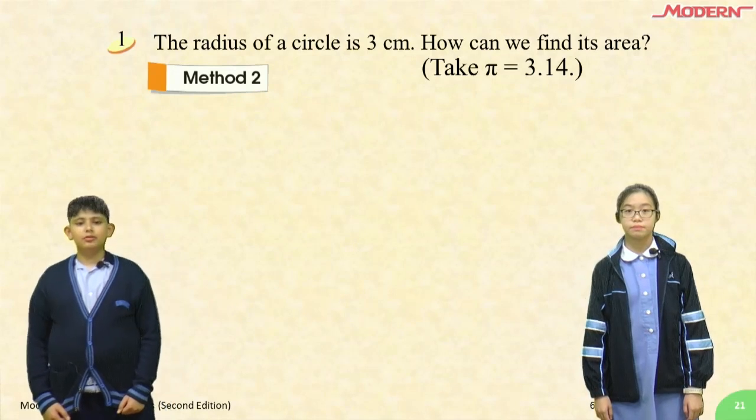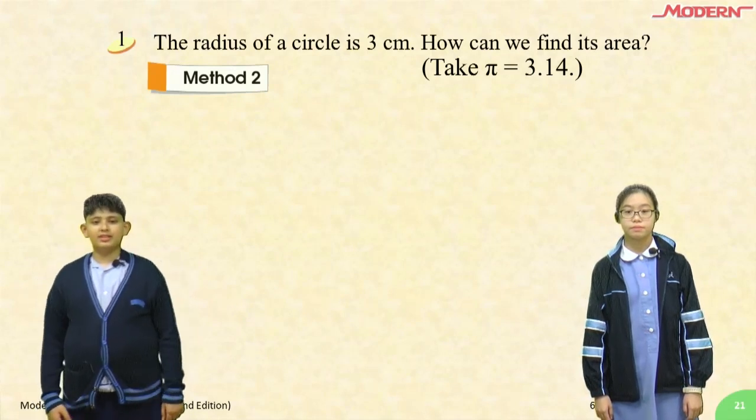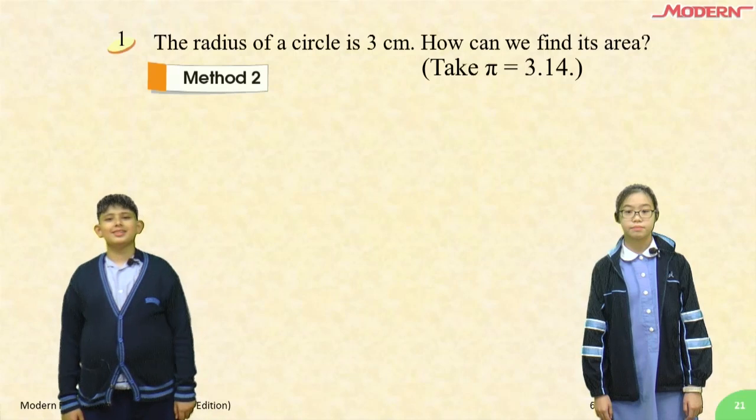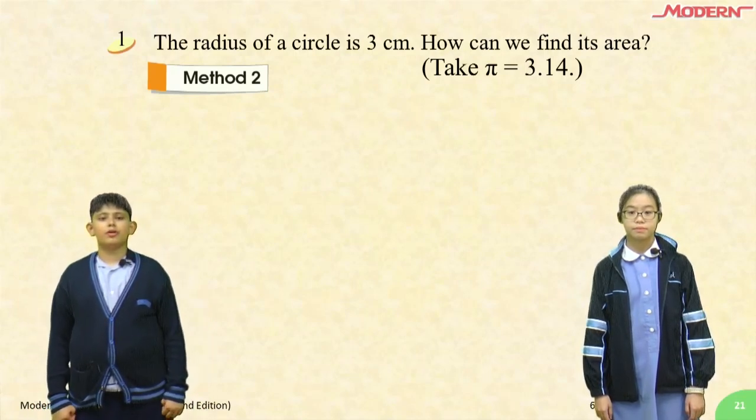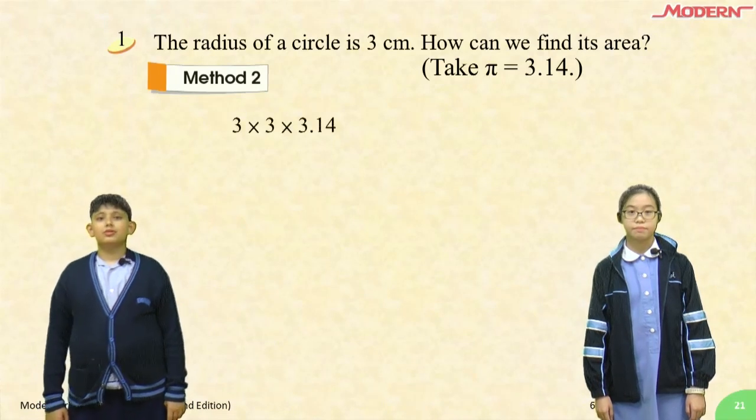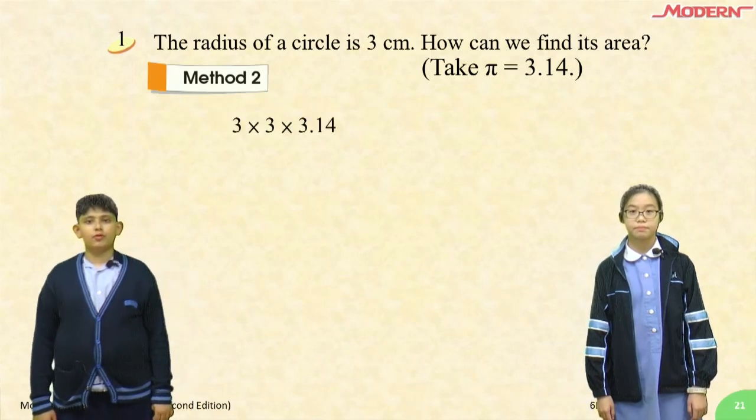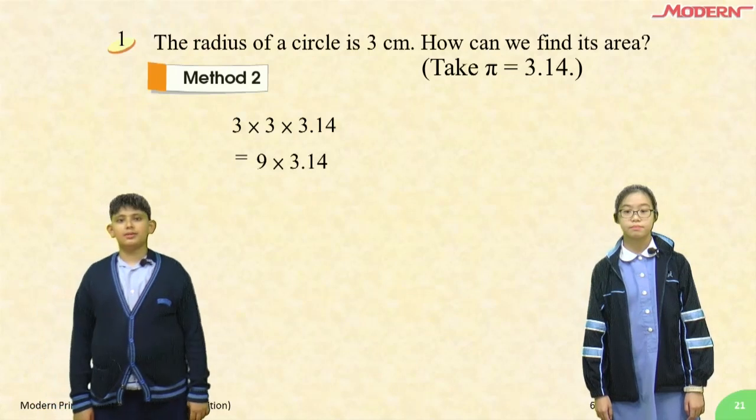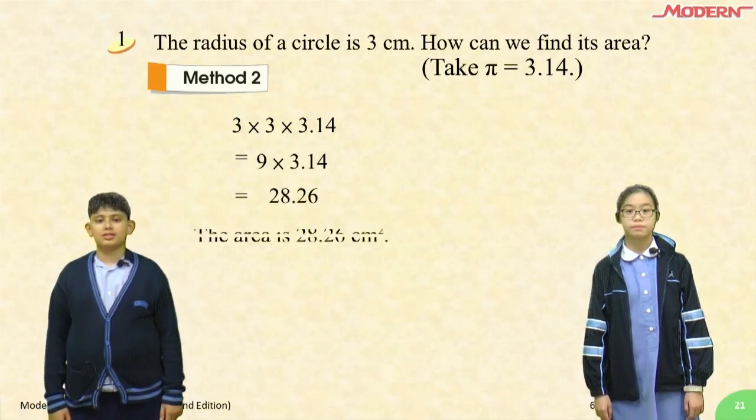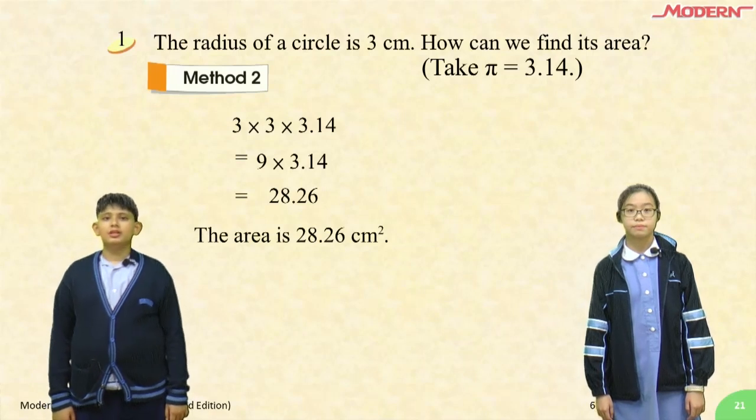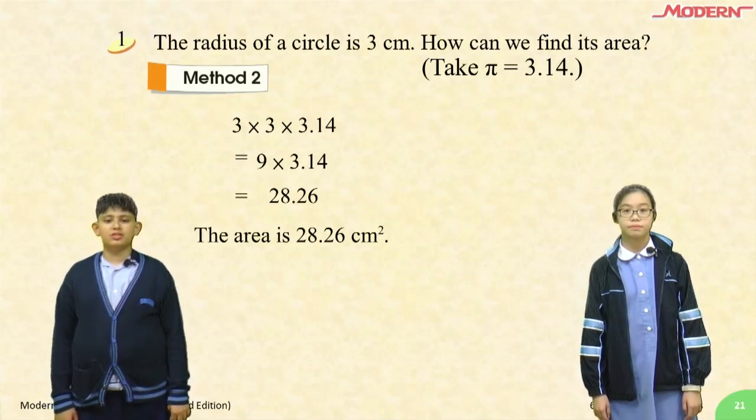Let me give you an example. The radius of a circle is 3 centimeters. How can we find its area? Take pi as 3.14. 3 times 3 times 3.14 is equal to 9 times 3.14, which is equal to 28.26. So the area is 28.26 centimeters squared.